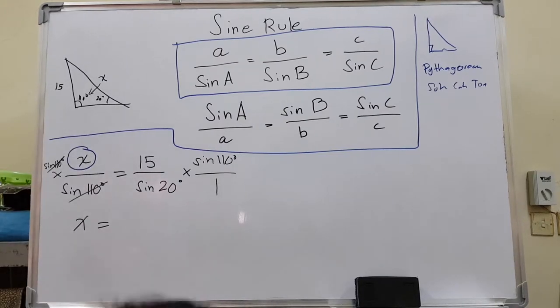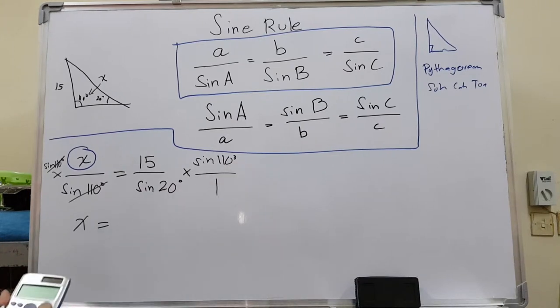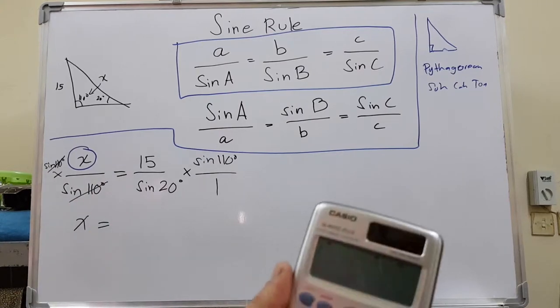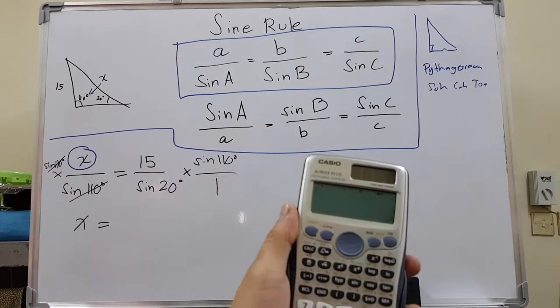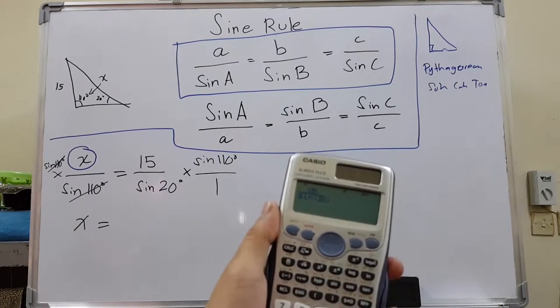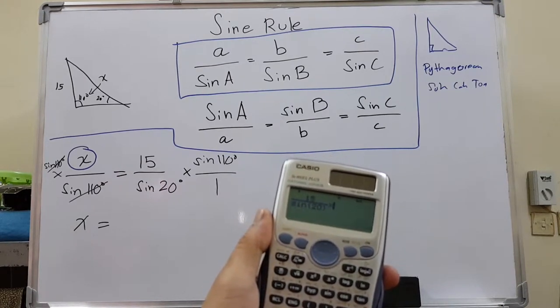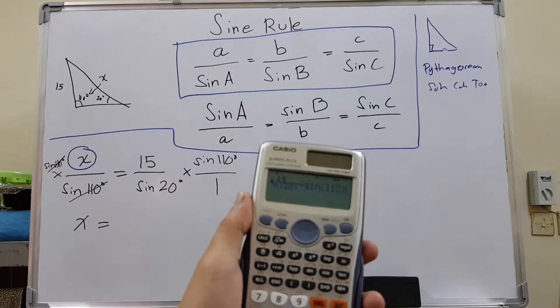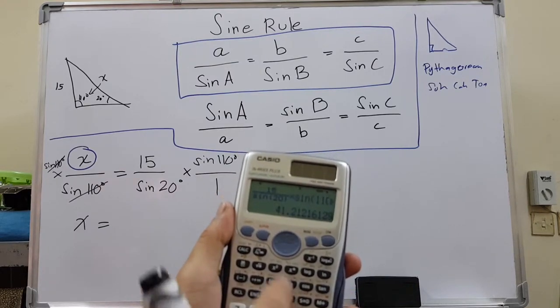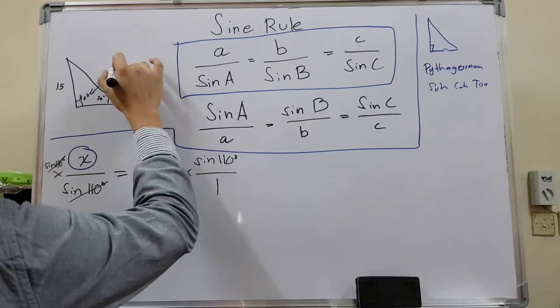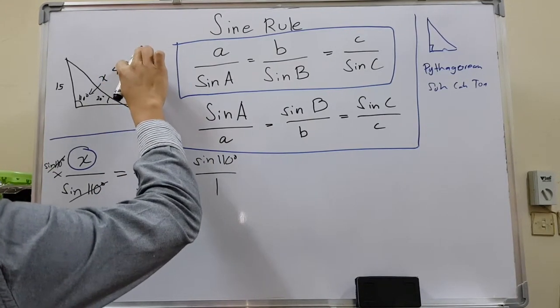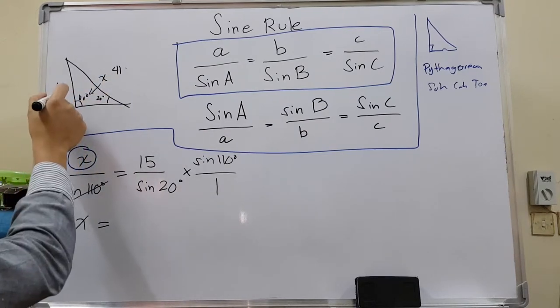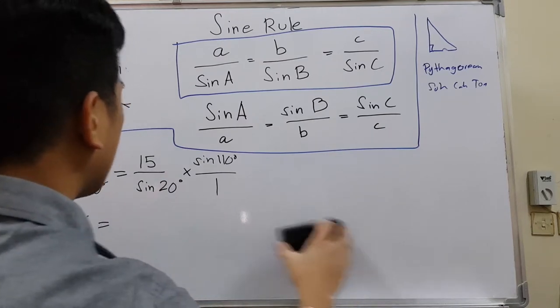All you have to do is put it on the calculator. Make sure your answers are in degrees or radians depending on what is given. So 15 over sine 20—make sure you close it with a bracket because sometimes the calculator gives a syntax error—times sine 110. Write everything on the calculator and you will get 41. So our side is 41, not 41 degrees, just 41. It could be centimeters or inches. That is how you find a missing side.